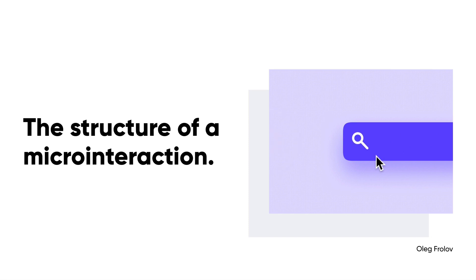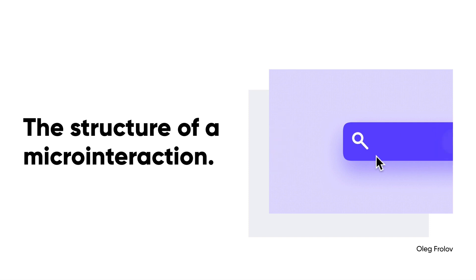A micro interaction has structure, which might sound surprising — you might think they're just a little animation — but they actually do have structure. This came from Dan Saffer's book, *Micro Interactions: Designing with Details*. In order to create an effective micro interaction there are four essential parts: the first is trigger, the second is rules, then there is feedback, and finally loops and modes.